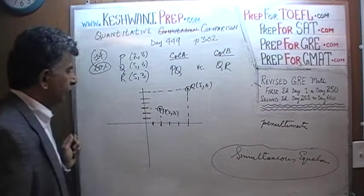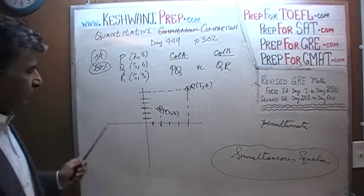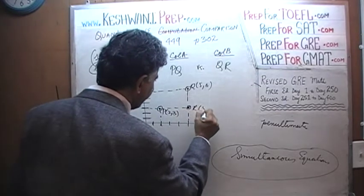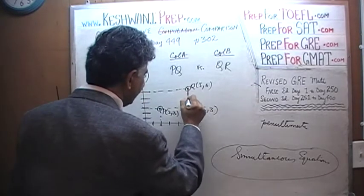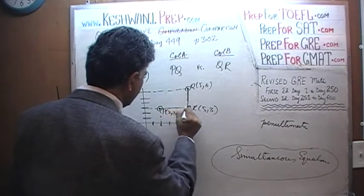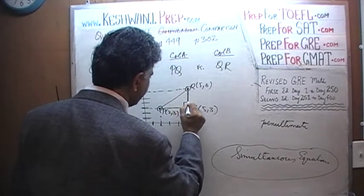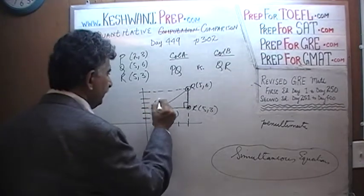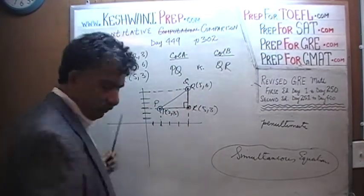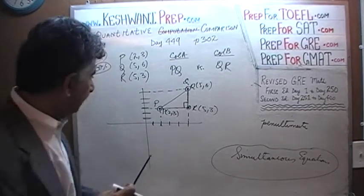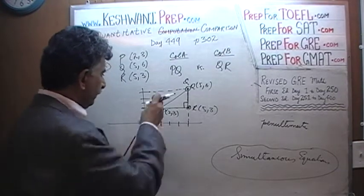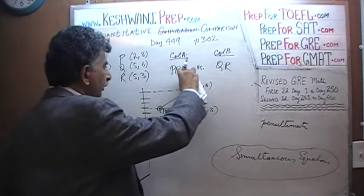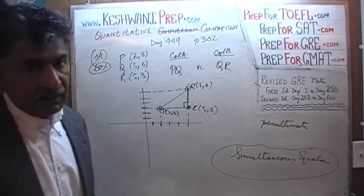Q is at (5, 6), going across to 5 and up to 6. This is our point Q. R is at (5, 3). As you can clearly see, points P, Q, and R form a nice right angle triangle.